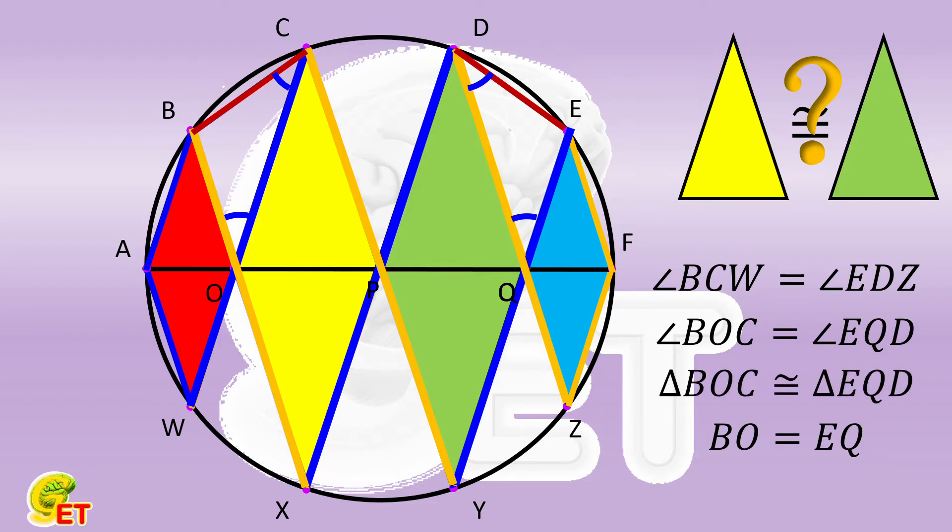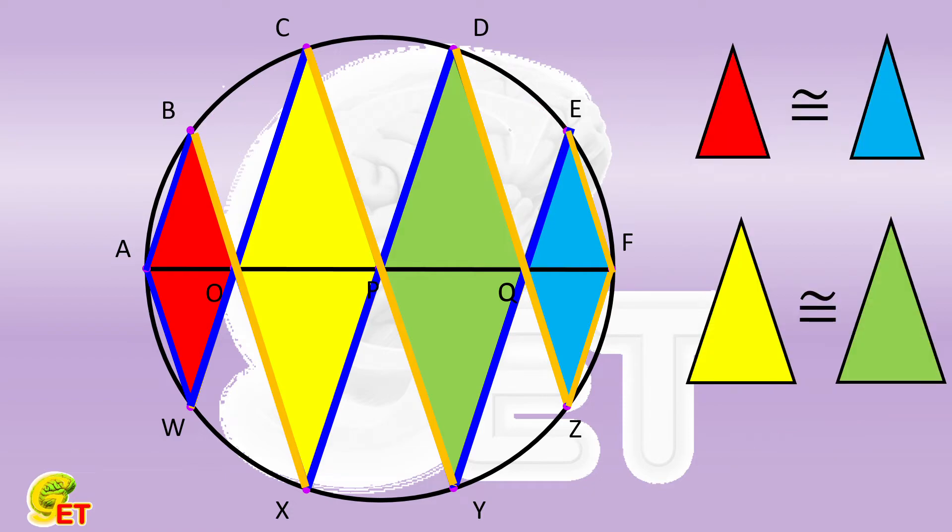Then, we obtain that OC and QD are equal. So the yellow and green triangles are also congruent. With these two sets of congruence relations, we get AO and QF are equal. OP and PQ are equal. So P bisects this diameter, and it must be the center of the circle.